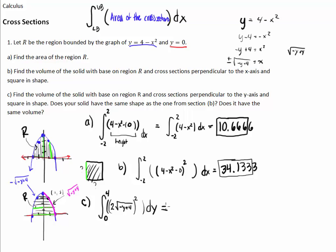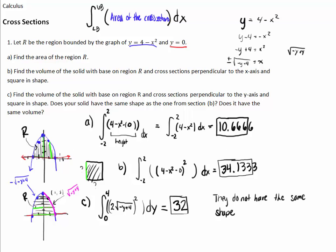We type that into our calculator and get exactly 32. That is the volume of our shape as squares perpendicular to the y-axis. Comparing to part B (34.133) and part C (32): they do not have the same shape, and they do not have the same volume. This one actually has more volume than the other.